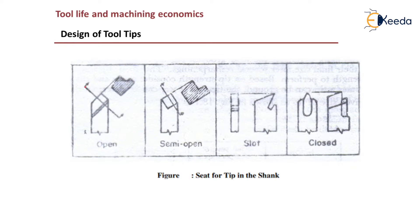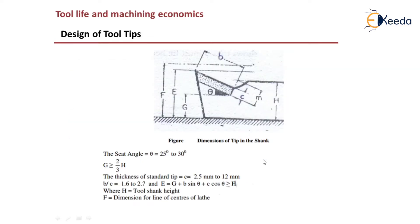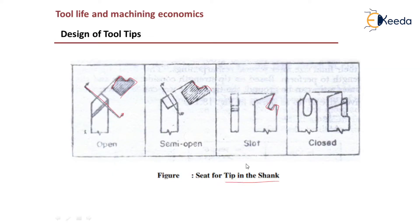If you cut through the tool and view it from the cross section, you can see the different types: open type, then semi-open type, then a slot inside which is why it is called slotted, and then closed type. These are all the different tool tip seats available in the shank.